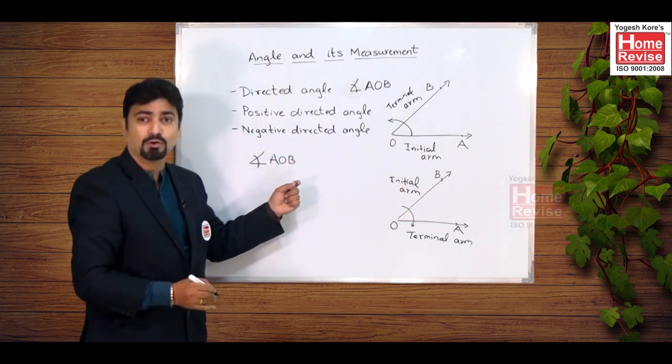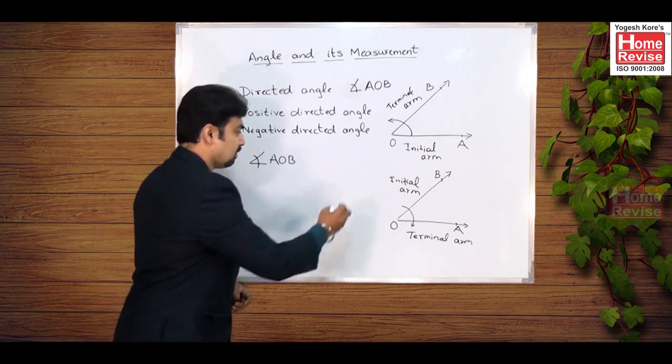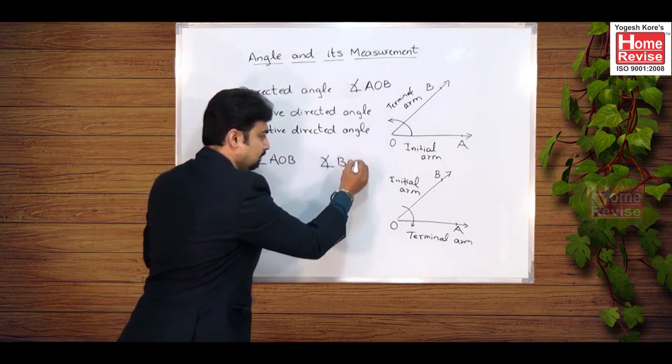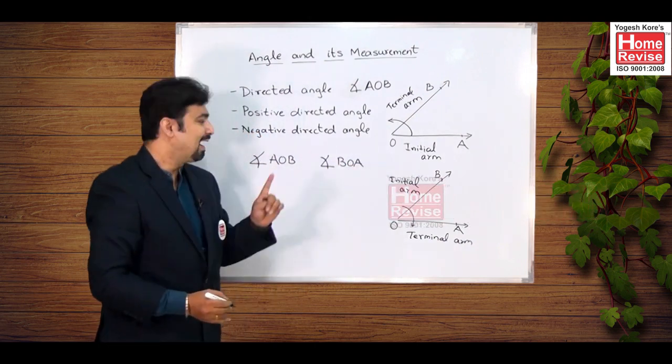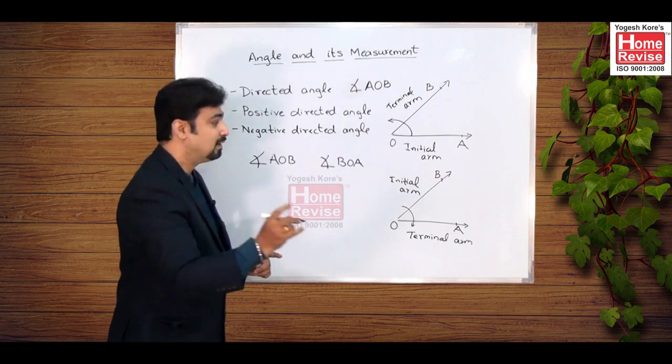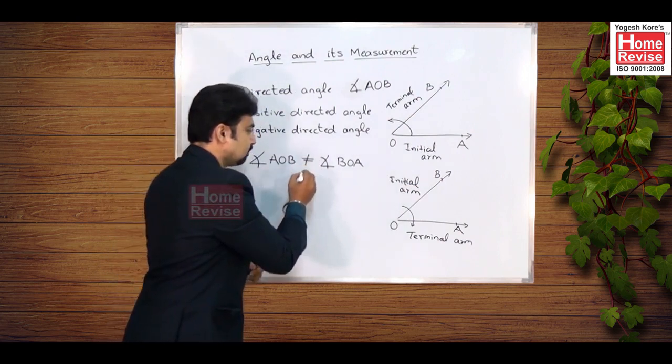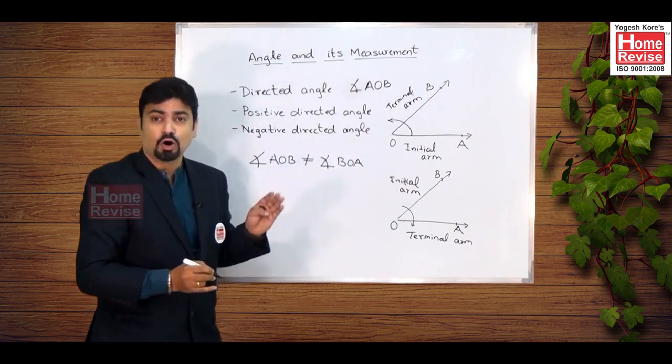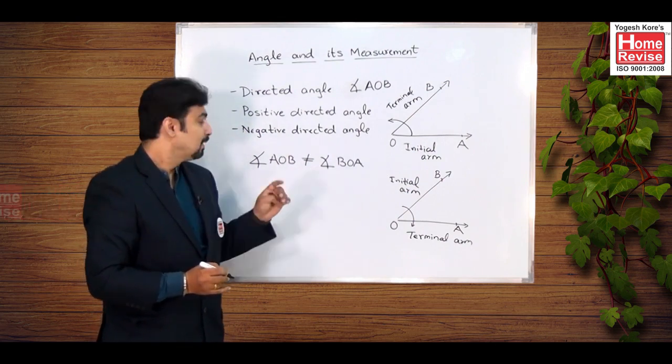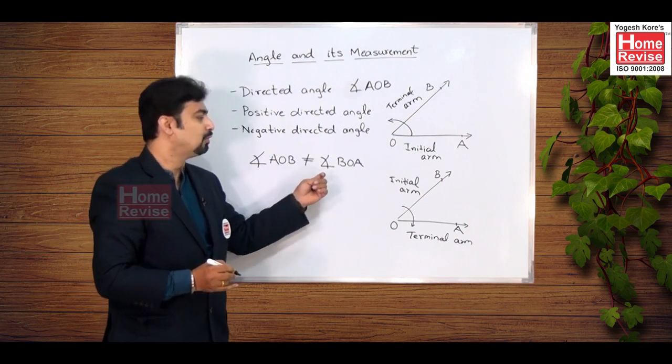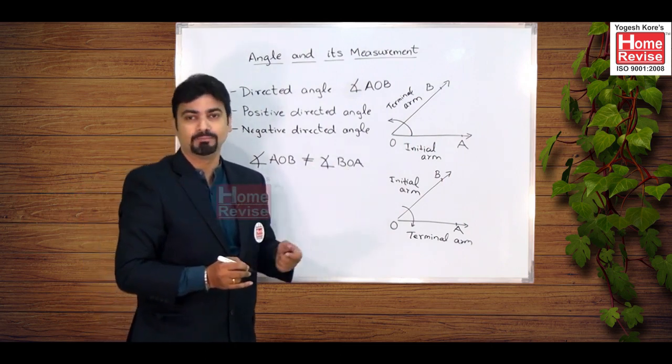Therefore we can say that the first one is denoted by directed angle AOB and the second one will be written as directed angle BOA. Note that these two angles are not equal, although their measures, the magnitude of their measures, is same. Directed angle AOB is not equal to directed angle BOA.